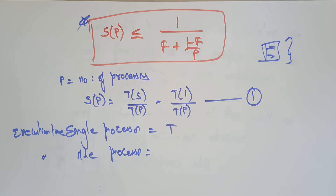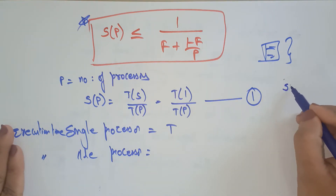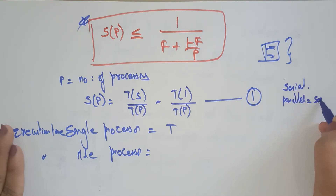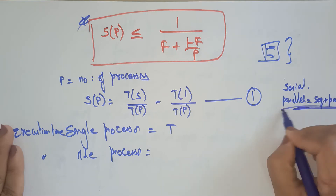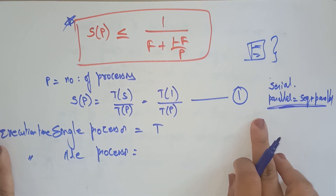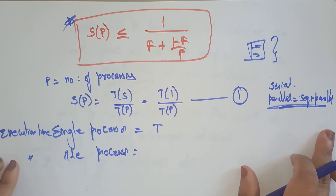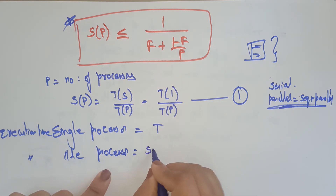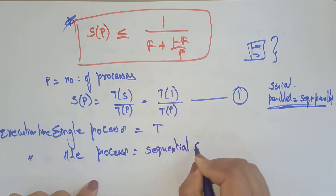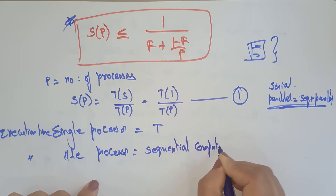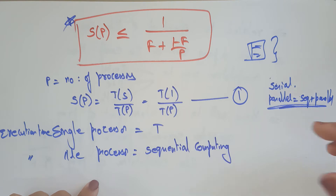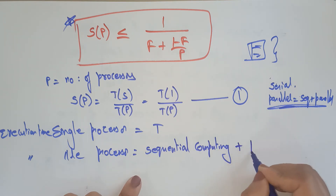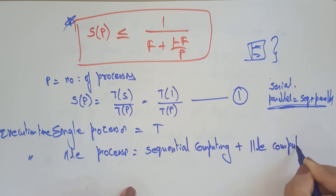If you are working on serial, only one option — serial is there. When you are working on parallel, you require sequential plus parallel; both are required. So the execution time of the parallel processor is nothing but sequential computing plus parallel computing time. Some part of the task may require sequential access, some part may require parallel. Both should be added to get the execution time for the parallel processor.